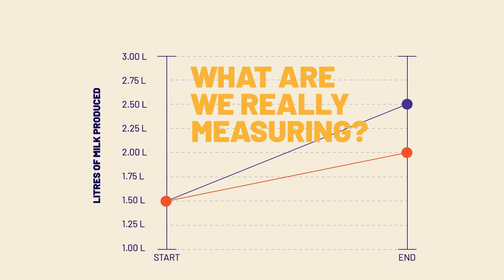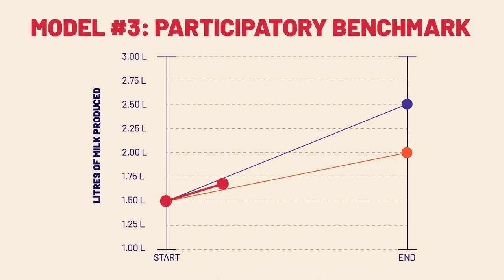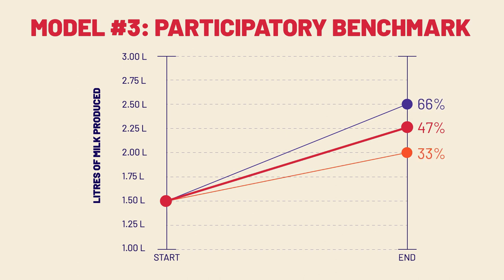That brought us to this final model. Here we find productivity increased for women in the program by 47%. Now that we don't have to filter out all the additional time spent — only time more than an extra hour — our productivity increase looks even better than the 33% from the previous model.